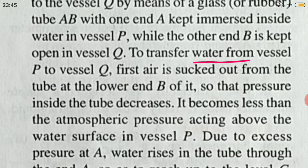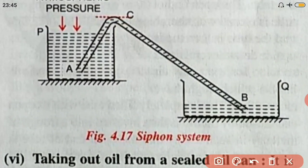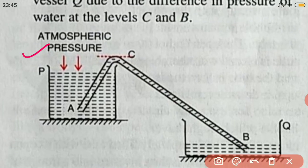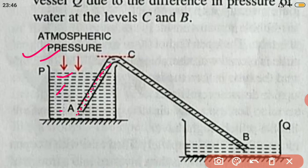Once air is sucked out from the tube, the pressure inside drops. The atmospheric pressure acting on the surface of the liquid in vessel P pushes the liquid into the tube. The pressure at end A is high — atmospheric pressure plus the liquid pressure — so the liquid rises up to level C. Once liquid reaches level C, because the pipe is full and due to the weight of the water itself, the liquid flows down and drops into vessel Q.